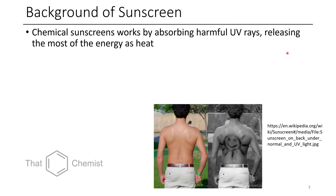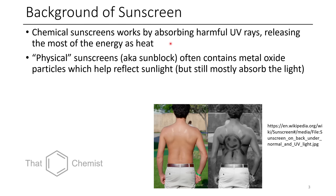The background of sunscreen is that it works by absorbing harmful UV rays and releasing most of that energy as heat. This is still somewhat ambiguous in the literature, and the rationale for different structural motifs in sunscreen is not well described, but I'm going to summarize what we do know. There are also physical sunscreens — which are still chemicals — but they are usually metal oxides, including zinc oxide as well as titanium dioxide. These still absorb most of the light; even though some sources say they just reflect it, they actually absorb as much as 95% of the light.